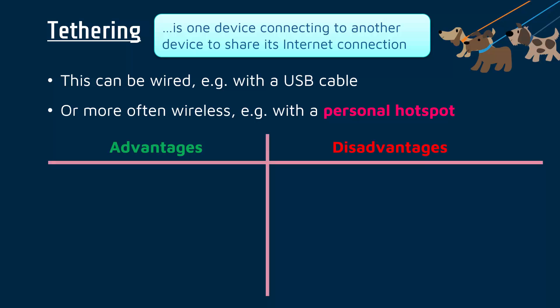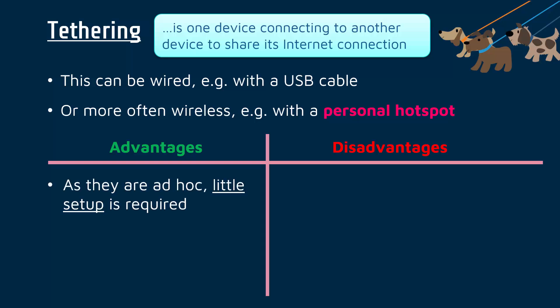Now, clearly to have this tethering going on, you need to have at least one device with an internet connection, and one or more other devices tethered to it. A very common exam question is to evaluate a setup like this — what are some good things and some bad things about tethering as a concept?